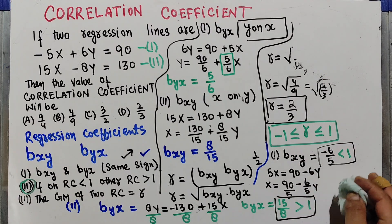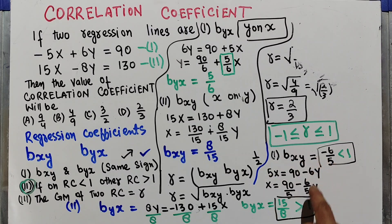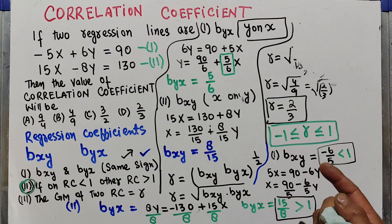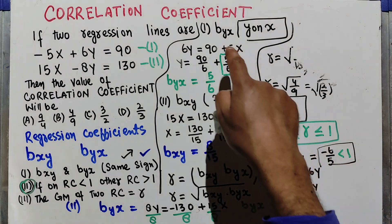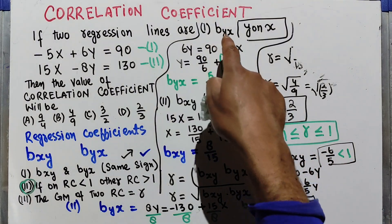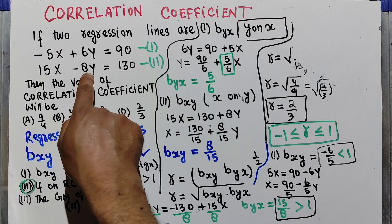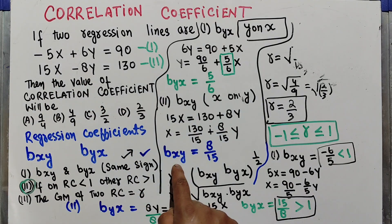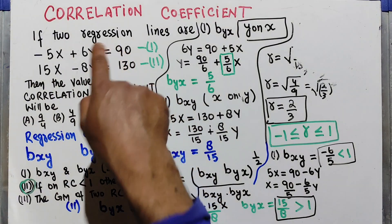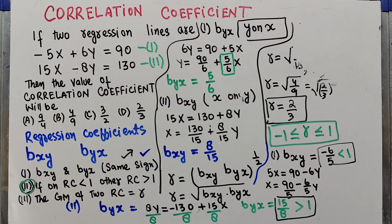These two scenarios were shown to explain why we cannot take B_YX from the second equation and B_XY from the first equation in this question, because those three properties would not all hold. I hope this video was clear. Thank you.